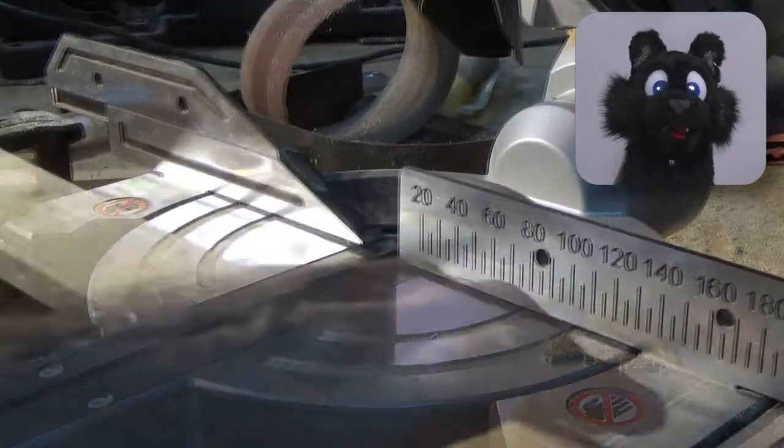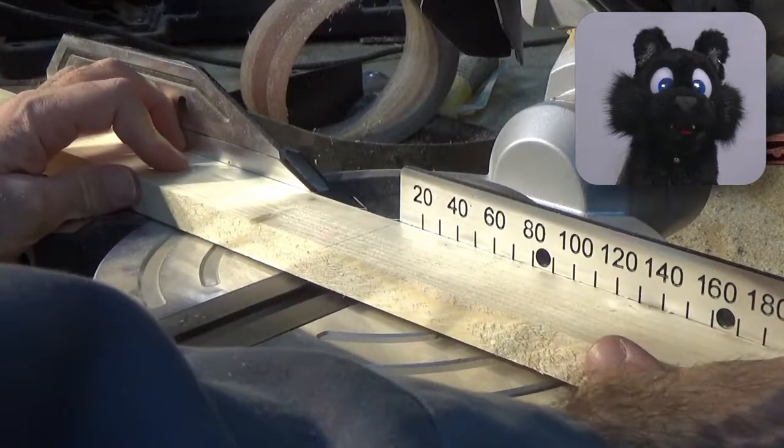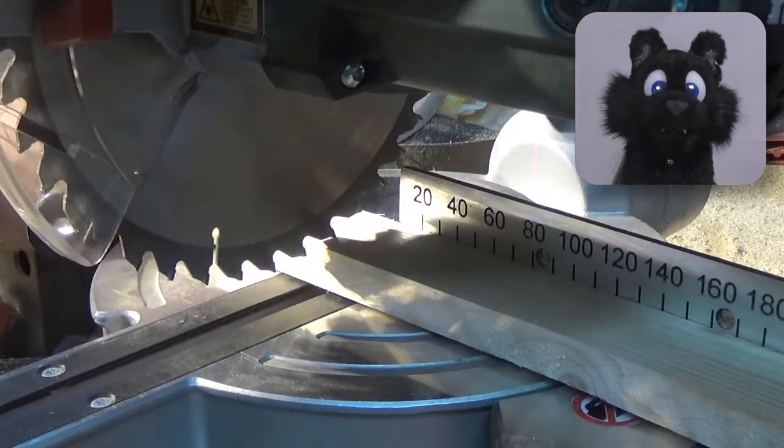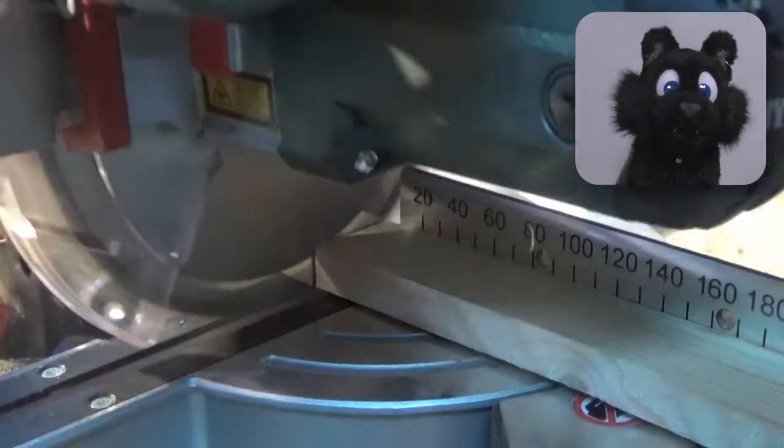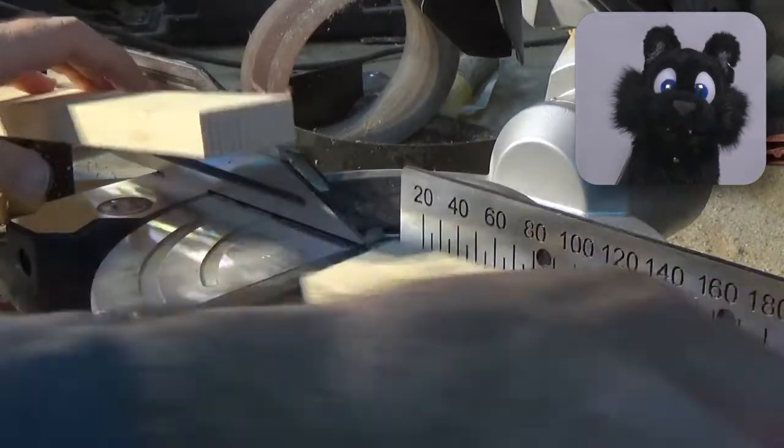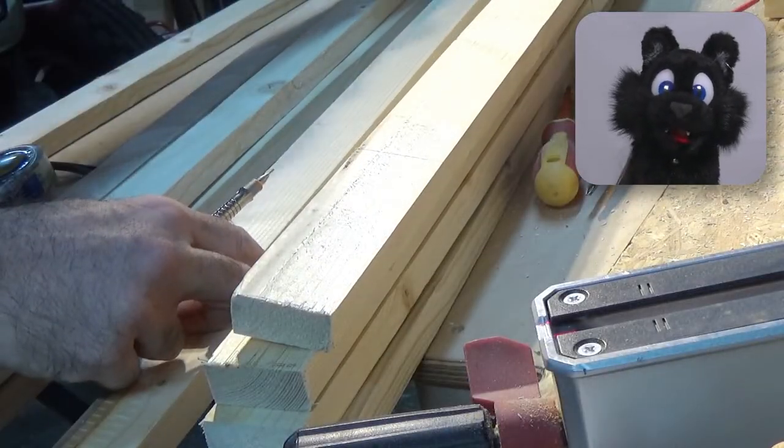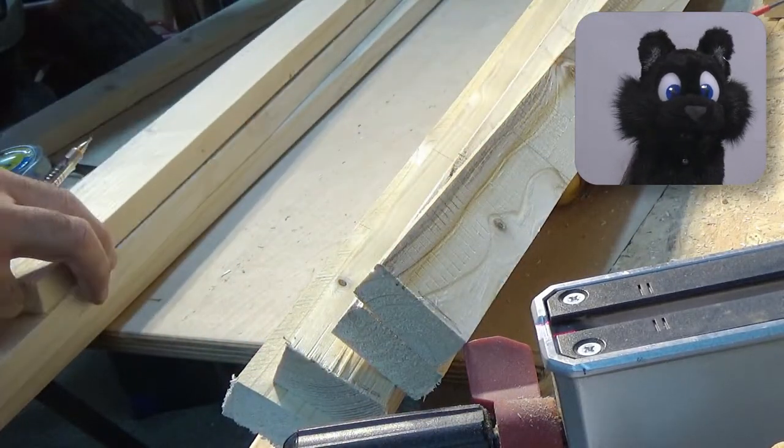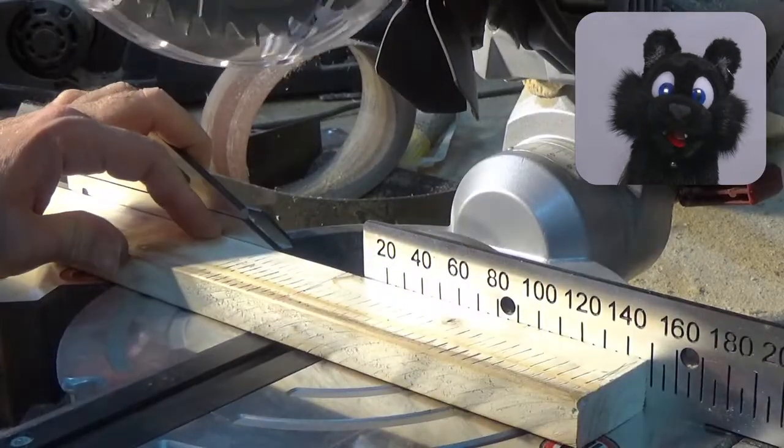Cutting the lumber to size is next on the agenda. I want six levels, so I need six support frames for the HDF. That gives 24 frame elements and another six diagonal braces to prevent sagging. Add four vertical supports and another two braces on the outside. Lots and lots of cuts!